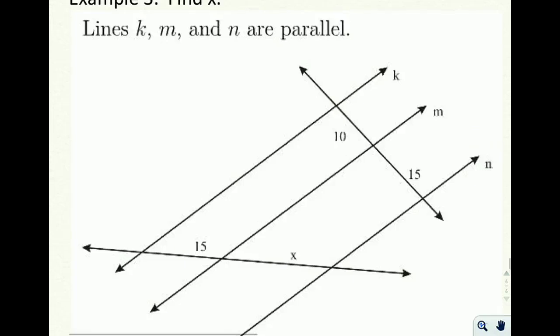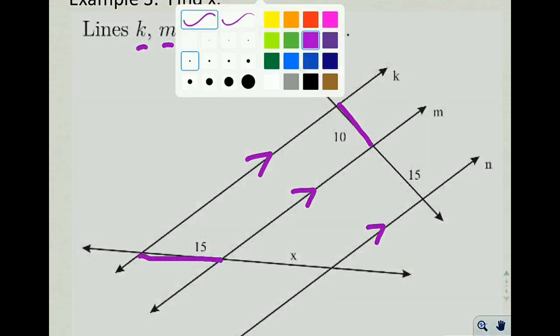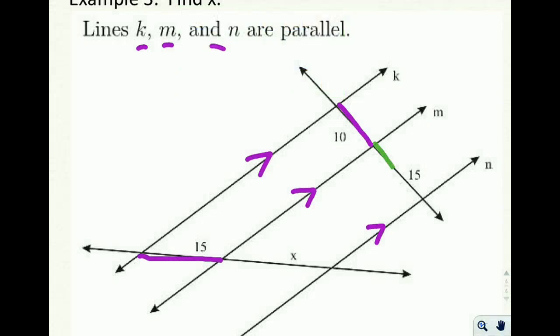And moving on to example 3. We're told that we have lines k, m, and n. So lines k, m, and n are all parallel to one another. So that means all of our proportion rules are going to work out for us. Which means this segment, this 10, over this 15, should be equal to this segment, 15, over this unknown piece, x.